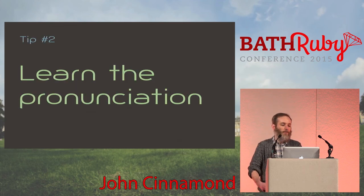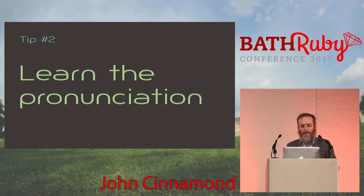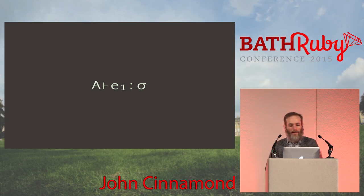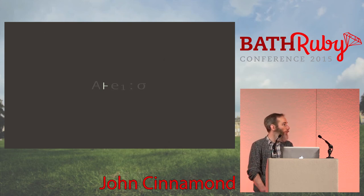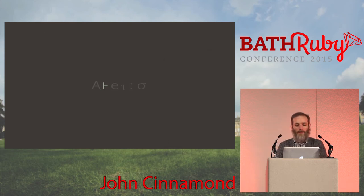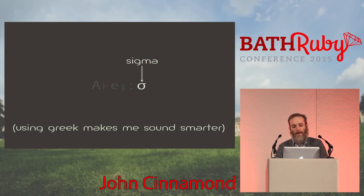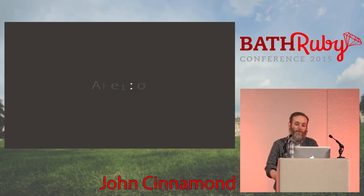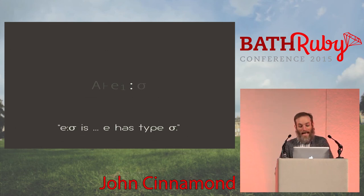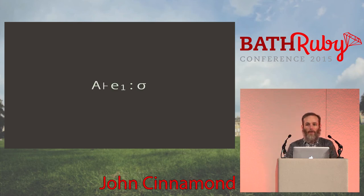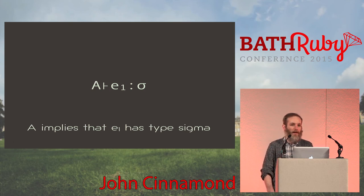My second tip is learn the pronunciation. When I see unfamiliar notation, my brain skips over it. But if you learn to say it out loud, it helps you understand. For example, you probably know how to pronounce A. The second character — this arrow symbol — you can pronounce as 'implies.' The thing at the end is just the Greek letter sigma. And the colon means 'has type,' as the paper explains: E colon sigma means 'E has type sigma.' So you can read a formula as 'A implies that E1 has type sigma.'